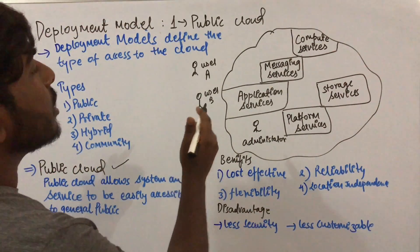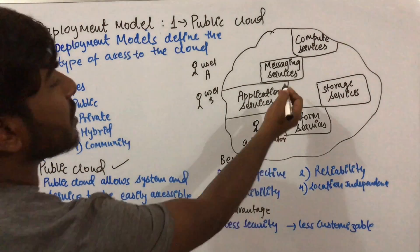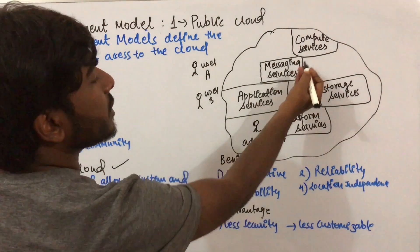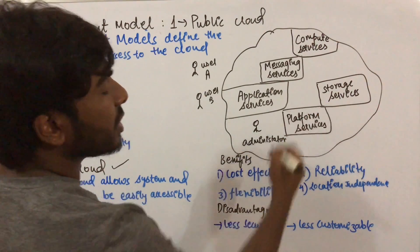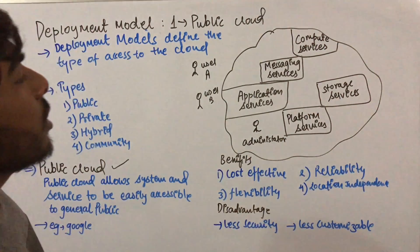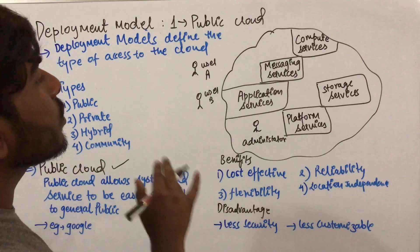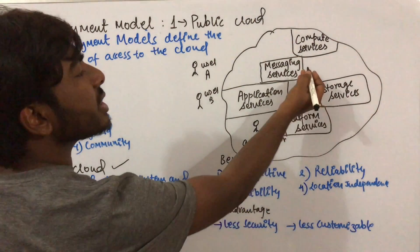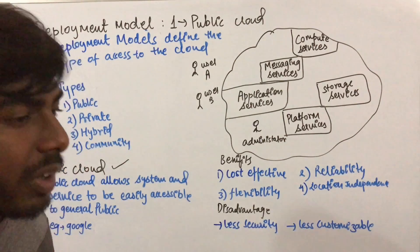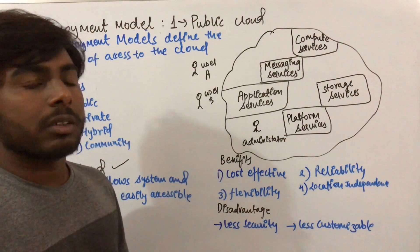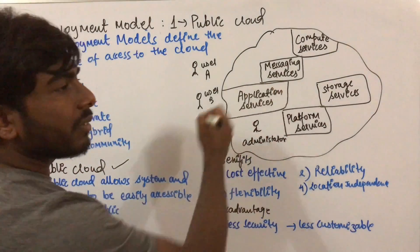We will understand public cloud through this diagram. These are the services: compute services, messaging services, application services, platform services, and storage services. We will be taking an example of Google. Compute services are the internal parts through which the cloud provider manipulates their content — so these are computing services.